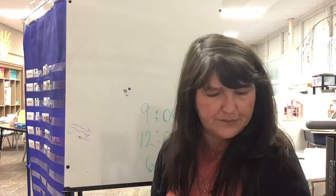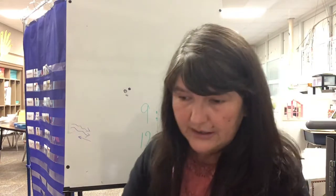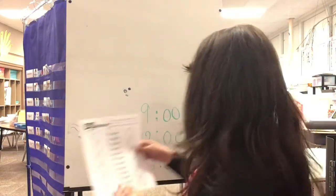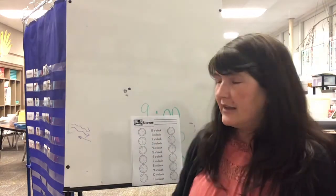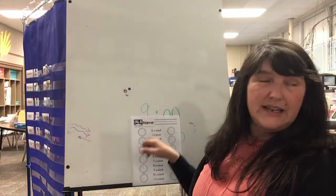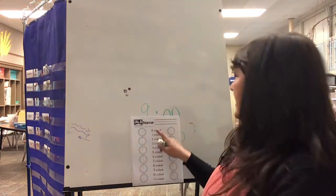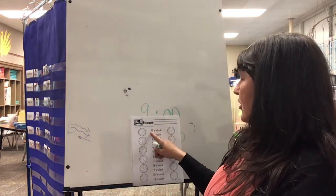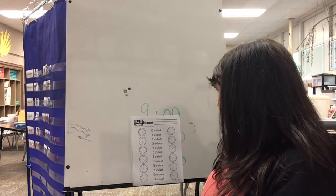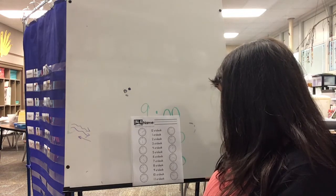So today you're going to practice those by looking at the time written out like this and drawing a line. This says 12 o'clock, so I need to find the one that is 12 o'clock.